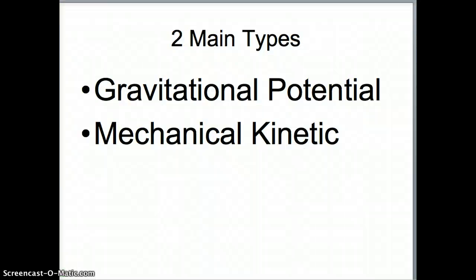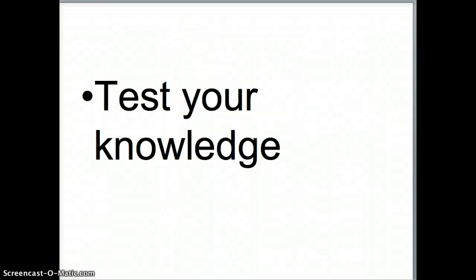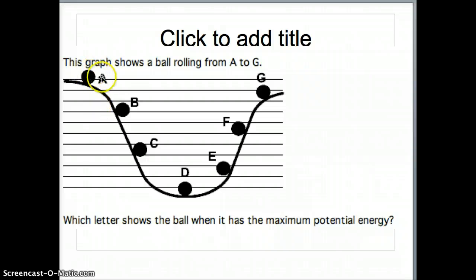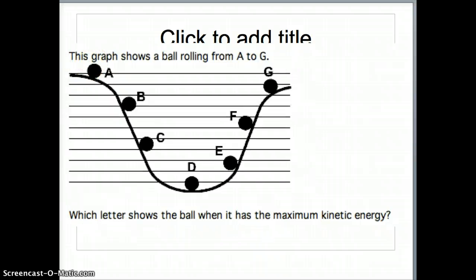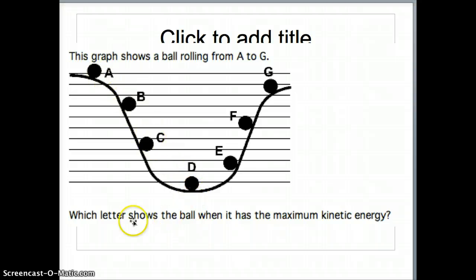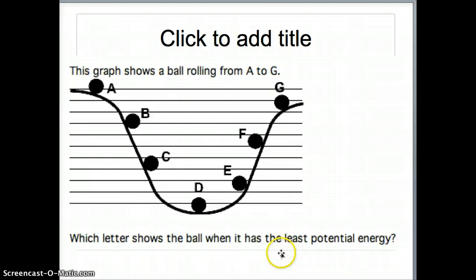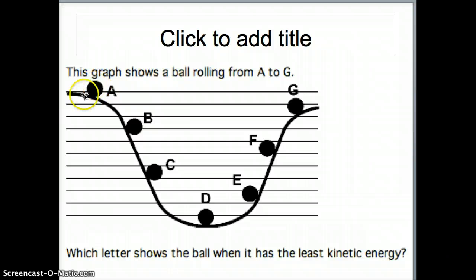Let's take a look at a test your knowledge section before we get into the math. If this is a ball rolling down a ramp and I ask what letter has the most potential energy, the answer is letter A — at its highest point it has the most potential energy. If I asked when it had the most kinetic energy, it would be letter D. Down at the bottom it would be the fastest, with the most kinetic energy. The least potential energy would also be letter D.